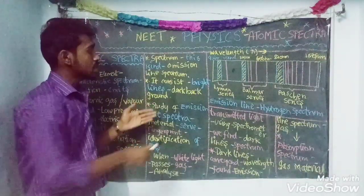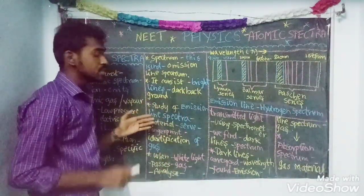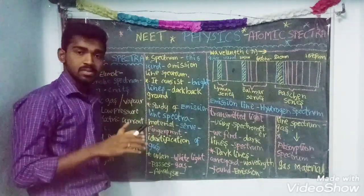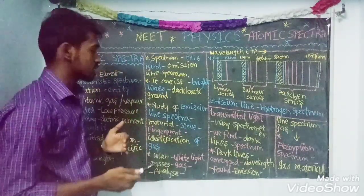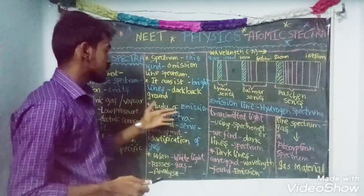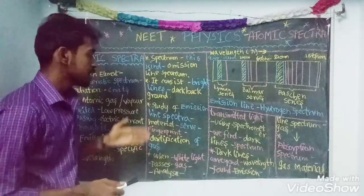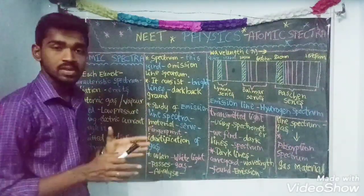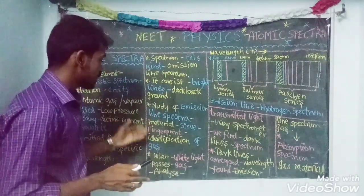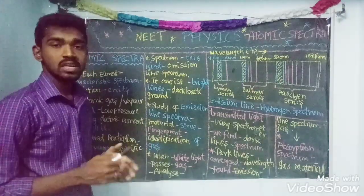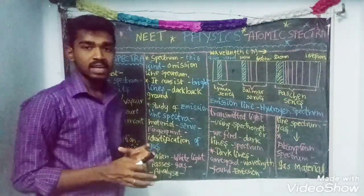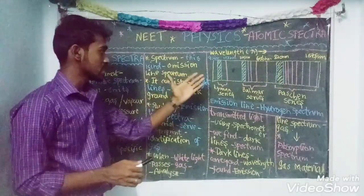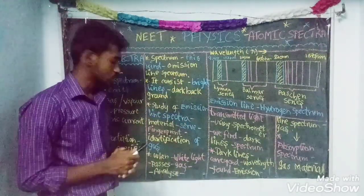So this is the diagram. The study of the emission line spectrum of a material — in this case, the study of the spectrum is the fingerprint of the gas. If you identify the gas, the fingerprint of the gas will be used. The emission line spectrum is used.